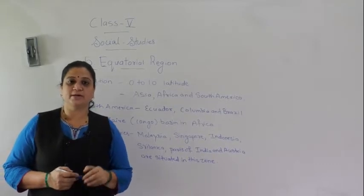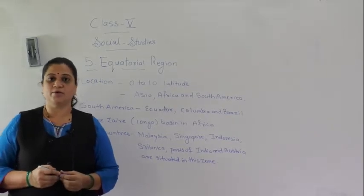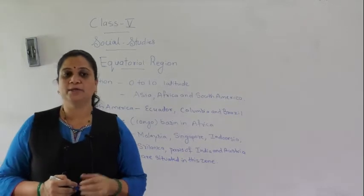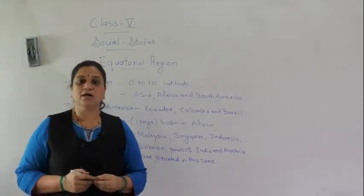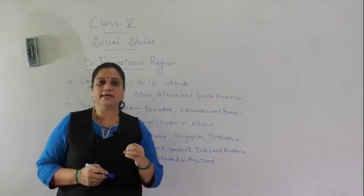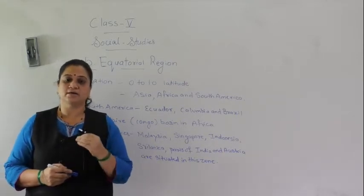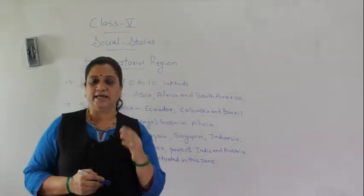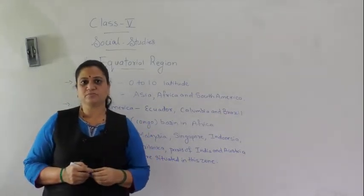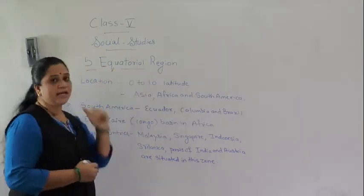Hello, my dear students, welcome again for the online classes. Today we will start with the new lesson: the equatorial region. In the last lesson we studied about the heat zones — our earth is divided into three heat zones based on the intensity of heat received by the earth's surface: the torrid zone, temperate zone, and frigid zone. Now, in this lesson we will study about the equatorial region.